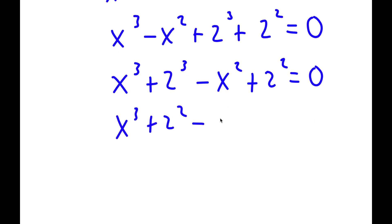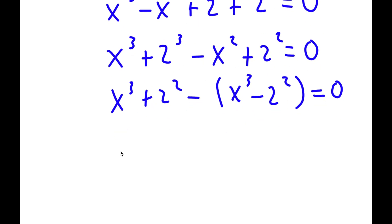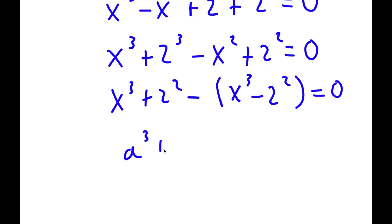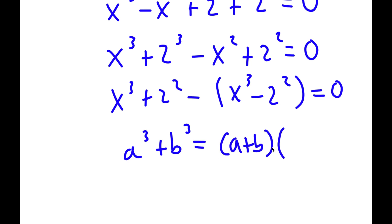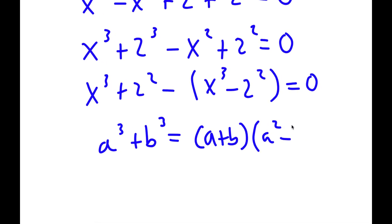From here, if I factor out negative 1, I get negative x squared minus 2 squared equal to 0. Now, if I have something in the form a to the power of 3 plus b to the power of 3, this is equal to a plus b times a squared minus ab plus b squared.